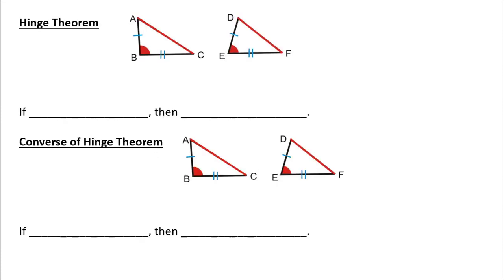So you have your hinge theorem. In your hinge theorem you have to have two sides equal, and if angle B is greater than angle E, then side AC is going to be greater than side DF.